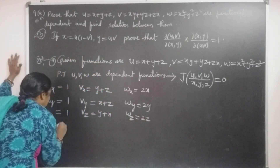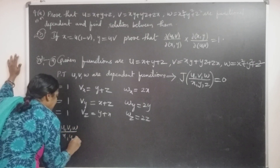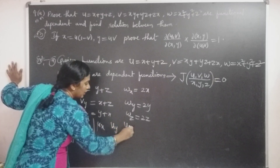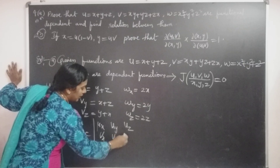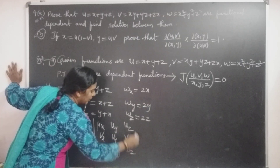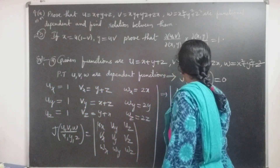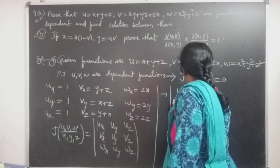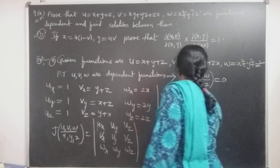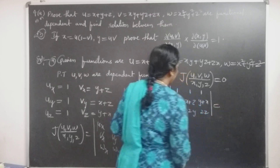Now we find the Jacobian J(U,V,W / X,Y,Z) as the determinant of the matrix with entries U_X, U_Y, U_Z, V_X, V_Y, V_Z, W_X, W_Y, W_Z. This determinant is: |1, 1, 1; Y+Z, X+Z, Y+X; 2X, 2Y, 2Z|.